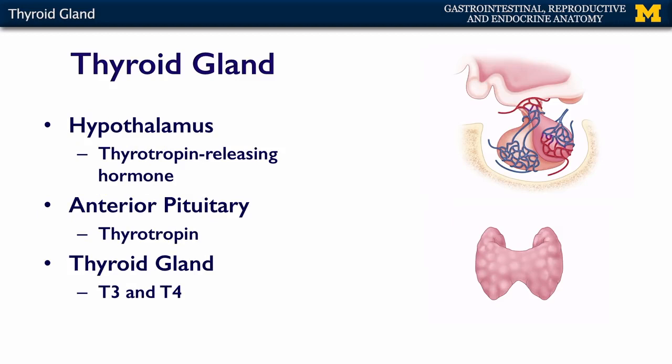The thyroid gland has two kinds of cells in it, and we'll talk about both types. The main part of the thyroid gland is regulated by your hypothalamus.